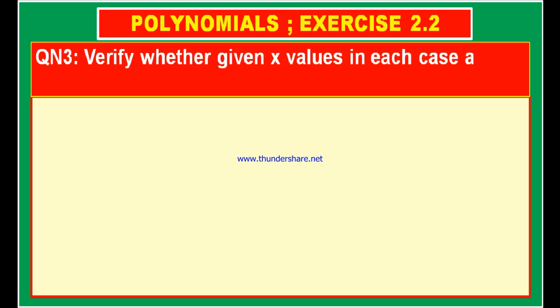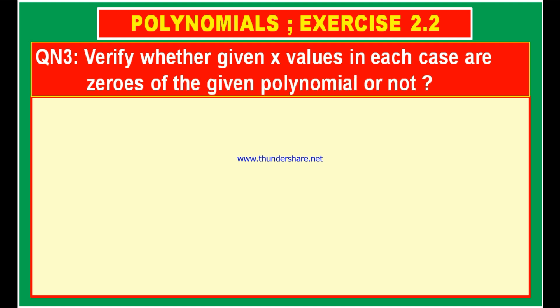Verify whether the given x values in each case are zeros of the given polynomial or not. Let us first of all recollect what is meant by zero of a polynomial. Zero is nothing but the value of the variable for which the value of the polynomial becomes zero.